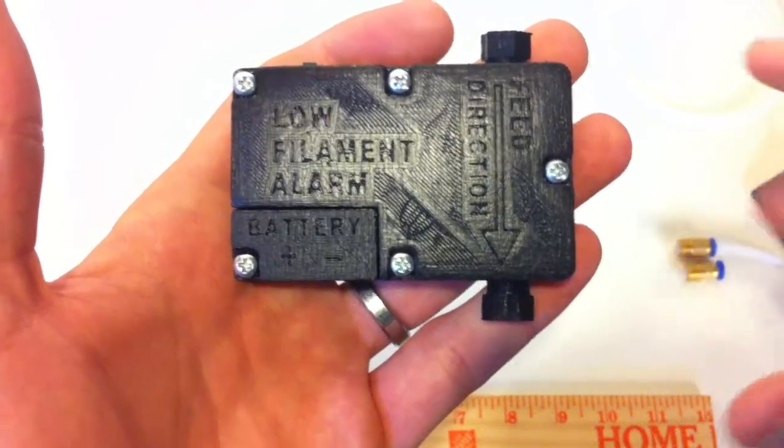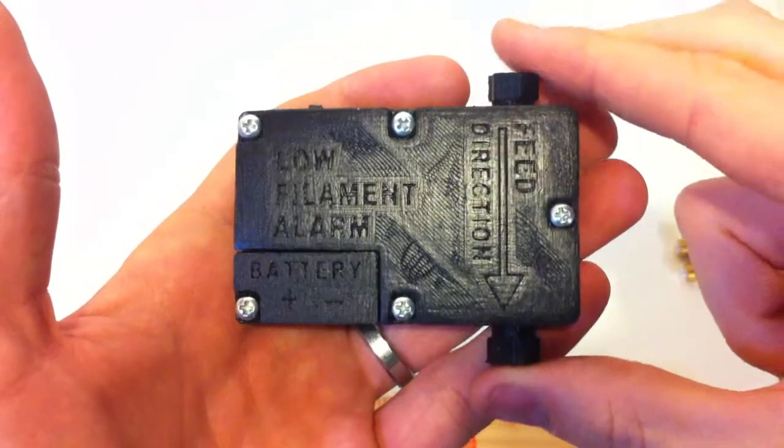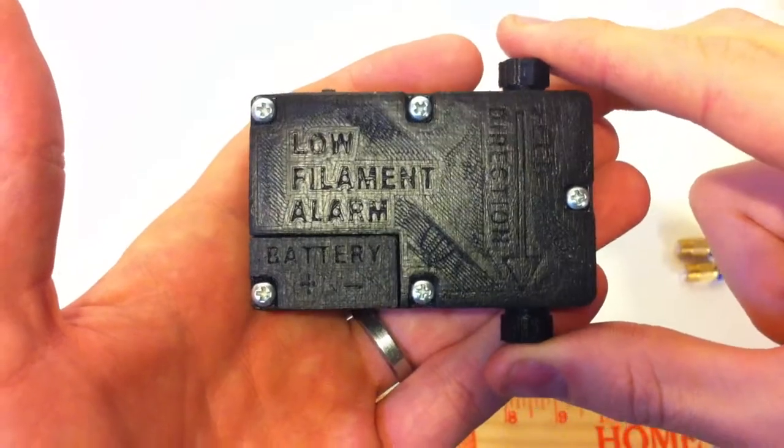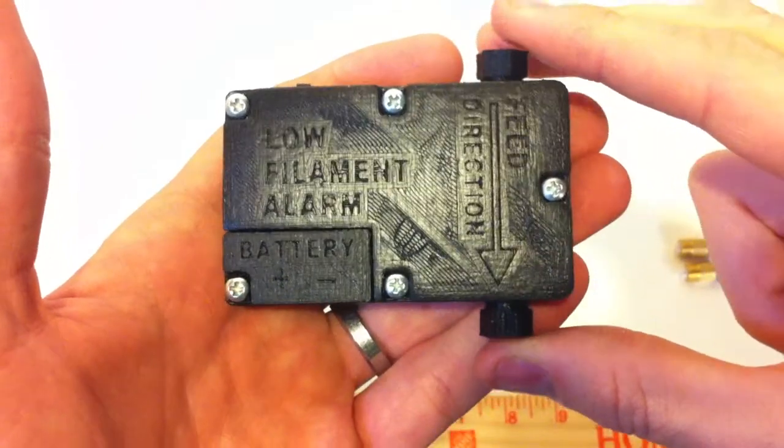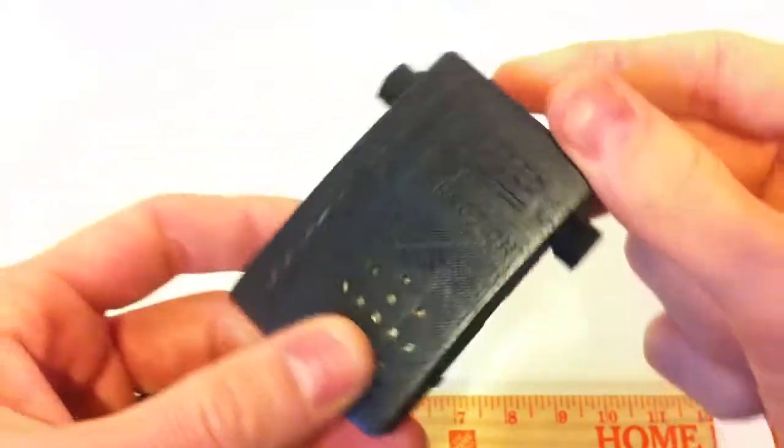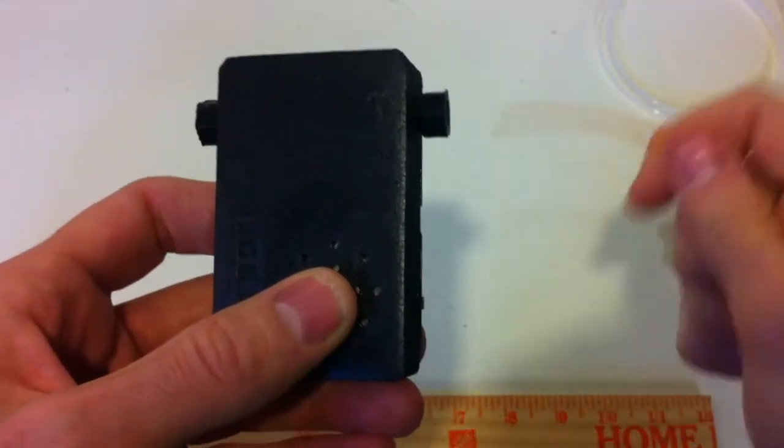What's up YouTube, this is Michael from engineerdog.com and this is a quick video demo of the new low filament alarm accessory for any 3D printer. This is a real simple device. It works with 1.75 or 3 millimeter filament.